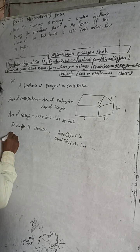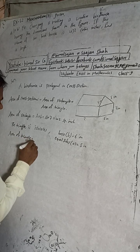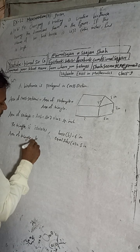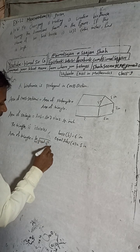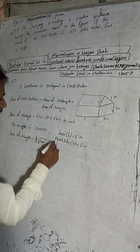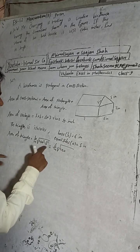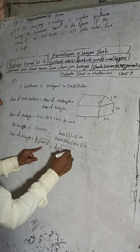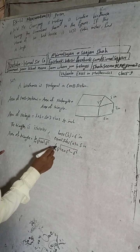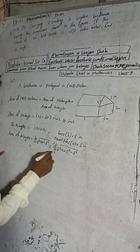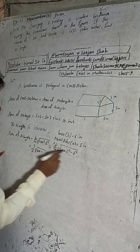Area of triangle equals b divided by 4 times the square root of (4a² minus b²). Here b is 6 and a is 5. So this becomes: 6 divided by 4, times the square root of (4 times 5² minus 6²), which is 3/2 times the square root of (100 minus 36).